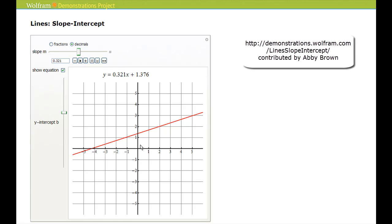So here we see a line graphed on the coordinate plane, and here we see the equation of the line. So the current line has slope 0.321.